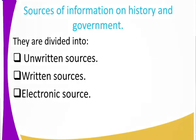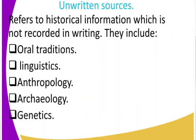Let us start from the unwritten source. Unwritten source refers to historical information that was not recorded — the prehistory. Prehistory is the history that was not recorded. So unwritten source is the historical information which was not recorded, and we have various examples of it.